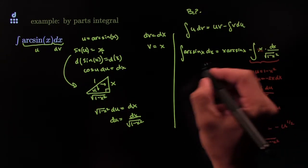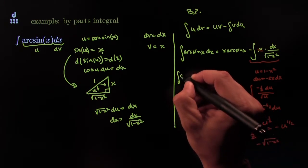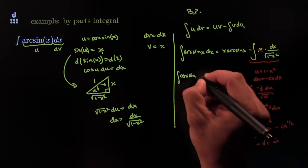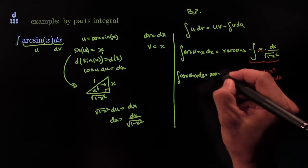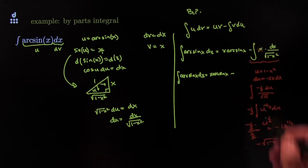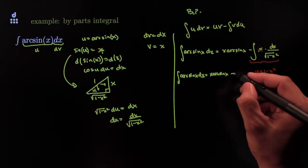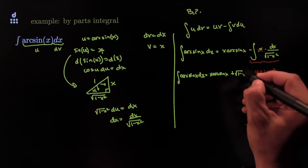So, put all that together, and we get that the integral of arcsine of x dx is equal to x arcsine of x minus this whole thing, which is that. So, it's plus the square root of 1 minus x squared,